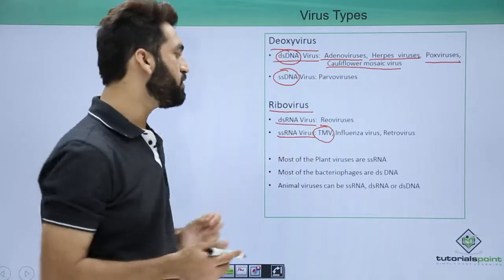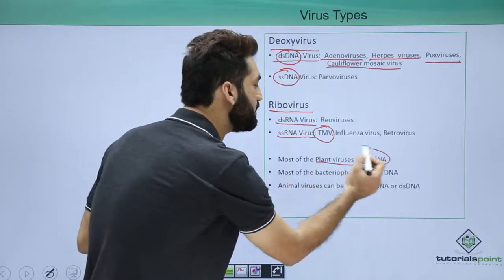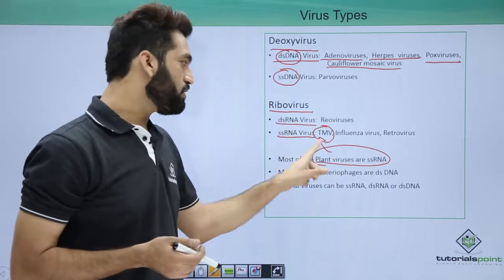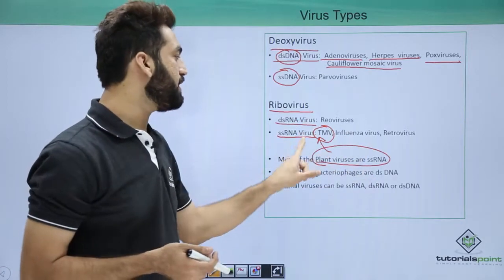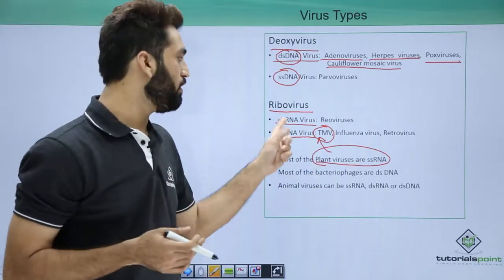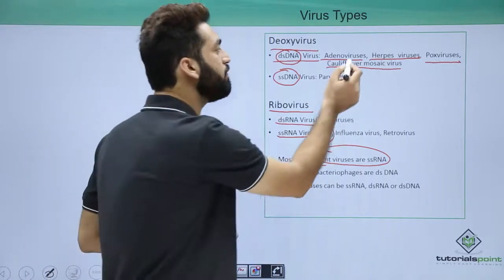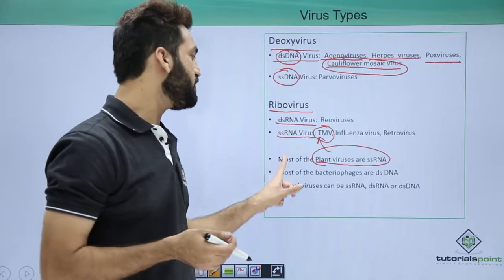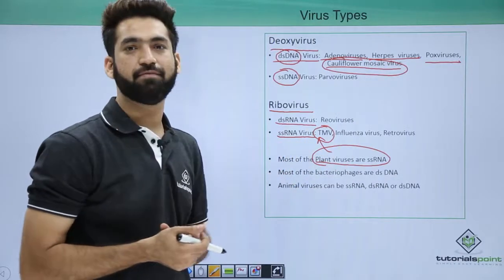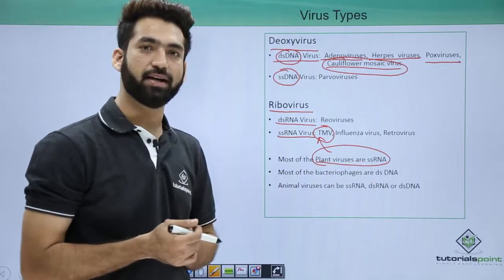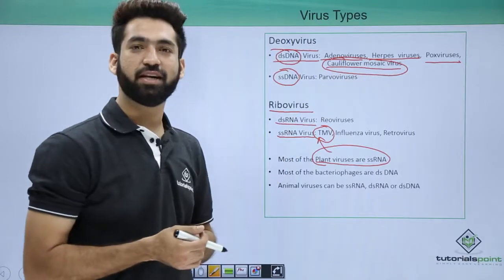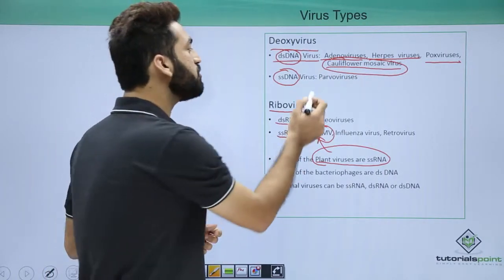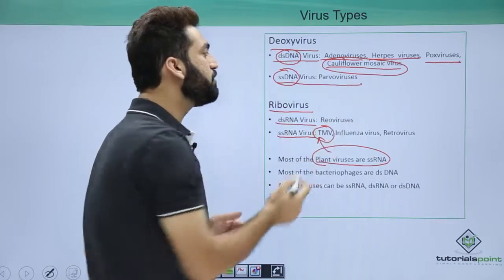Remember one important fact: cauliflower mosaic virus occurs in cauliflower and tobacco mosaic virus occurs in tobacco — both are plants. Most plant viruses are single-stranded RNA viruses, including TMV, but cauliflower mosaic virus is one important exception. So most plant viruses are single-stranded RNA, but cauliflower mosaic virus is a double-stranded DNA virus.